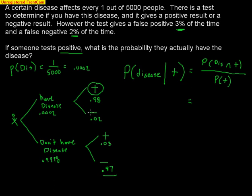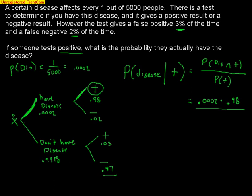On top would be the branch where you're positive and have the disease — a very specific branch on this tree diagram. Start on the branch where you have the disease, then work your way to the branch with a positive result. That's two things happening: have the disease and positive, which is .0002 times .98. On the bottom is the probability of a positive result. There are two branches that lead to a positive result.